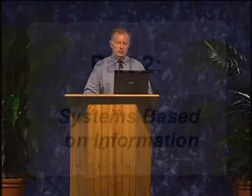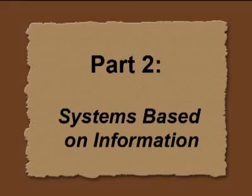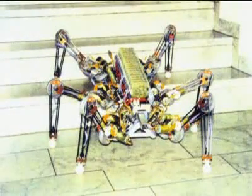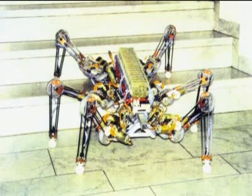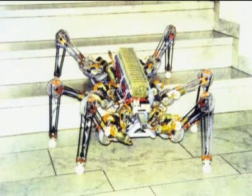Let's have a look at systems which are based on information. On this picture, you see a walking machine. It has six legs, and there is a computer installed and a special program, so this machine can work on plane and uneven surfaces. It can go upstairs and downstairs. What is the most important detail on this machine? Of course, it is the program.